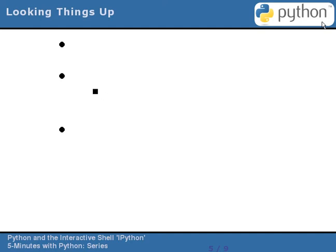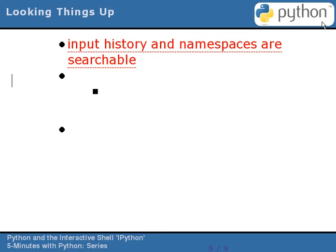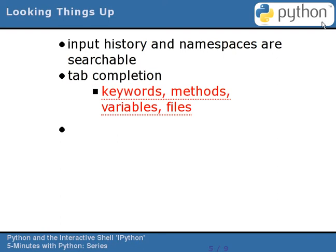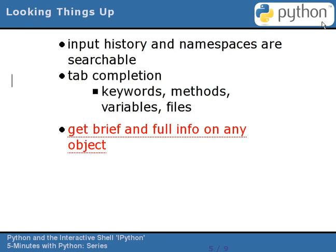IPython gives you a number of ways to quickly look up information, almost eliminating the need to keep reference manuals at hand. The input history and variable namespaces are fully searchable by wildcard and type of object. IPython provides extensive tab completion features, expanding names into variables, directories, and file names. It understands nested namespaces, and you can type partial expressions like className.tab and have it display the methods and attributes available to you. And you can query an object for information about its type, the namespace in which it is located, the source file from which it was loaded, and its docstring. You can also display the source fragment that defined it, and its call signature if the object was callable.